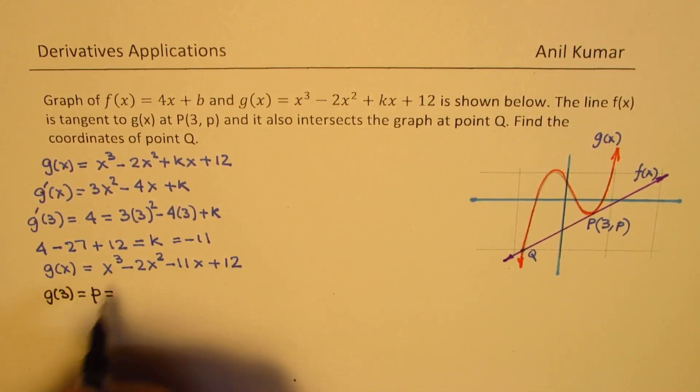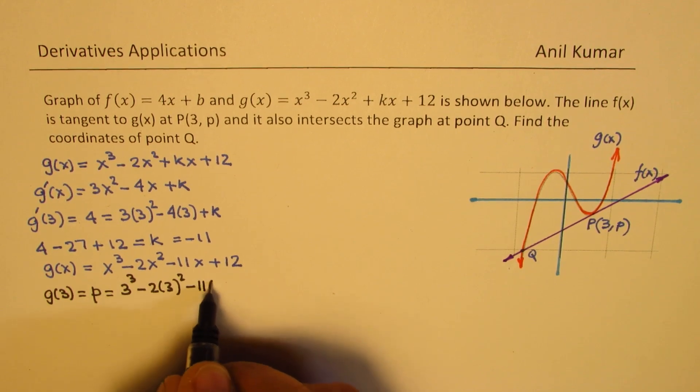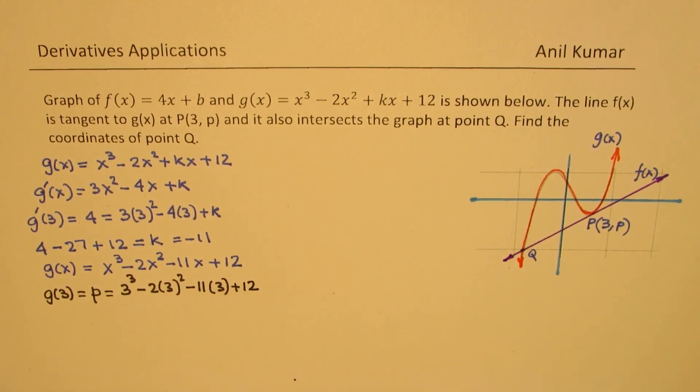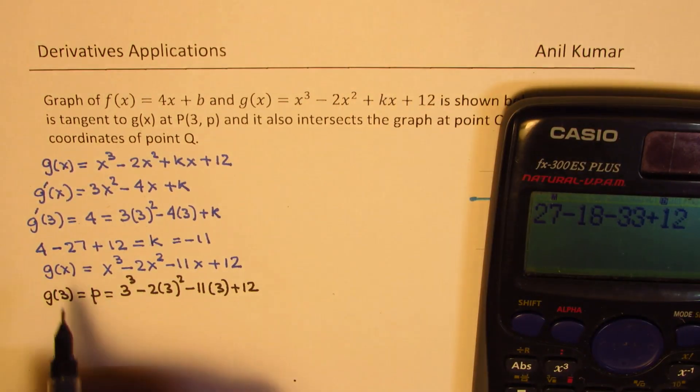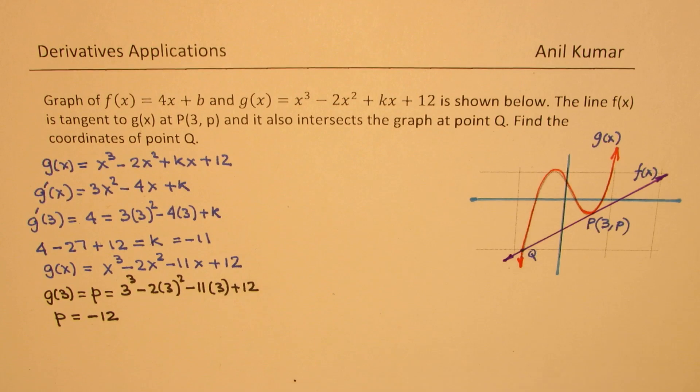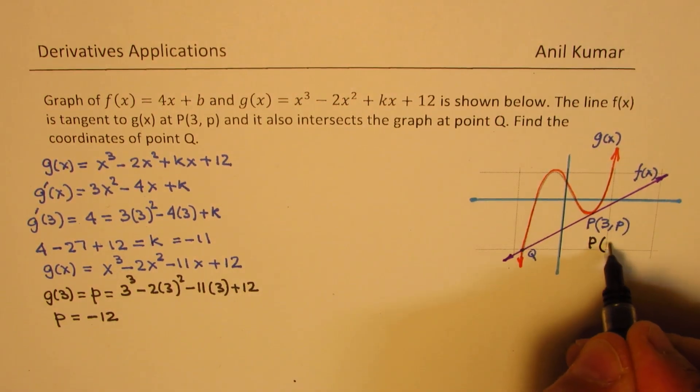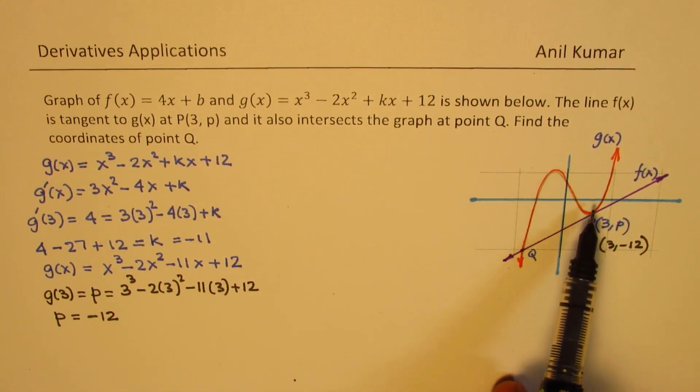So from here we can now get g(3), which is actually equal to p. So if I substitute 3 here, I get 3³ - 2(3²) - 11(3) + 12. Let's calculate this value which gives you the value for p: 27 - 18 - 33 + 12 = -12. So the point here is (3, -12).